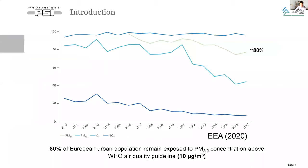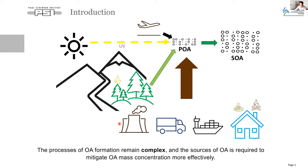The motivation of this study is that Europe still remains polluted. 80% of European urban populations are exposed to polluted air with PM2.5 concentration larger than 10 microgram per cubic meter, which is above WHO air quality guidelines. However, the processes of organic aerosol formation remain complex. Thus, we need to understand the sources of OA to mitigate OA mass concentration more effectively.